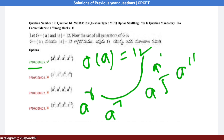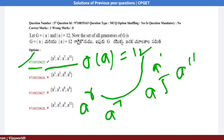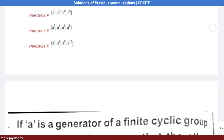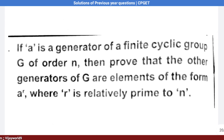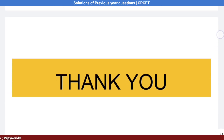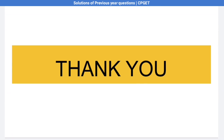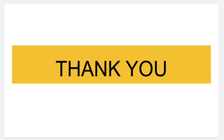The generators of G are A^1, A^5, A^7, A^11. Option 1 is the correct answer. In the next video, we will discuss more problems of the CPZ entrance examination. Thank you.